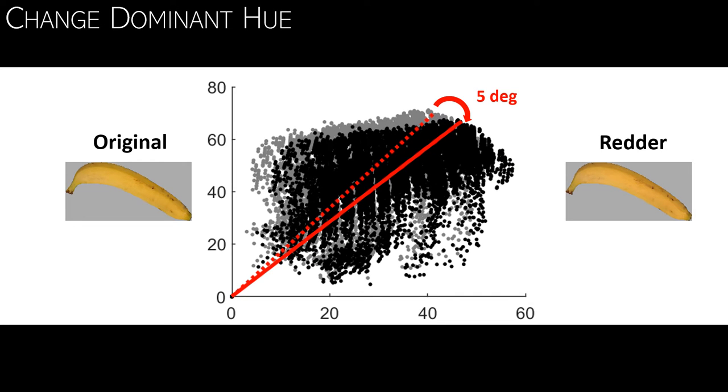And the new black dots here are the same as the gray dots in the background. The only difference is that the black dots are all rotated by five degrees, resulting in a banana that is slightly redder than the original there on the right side.